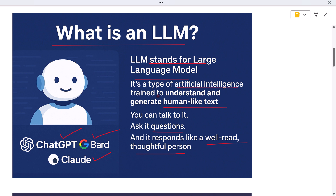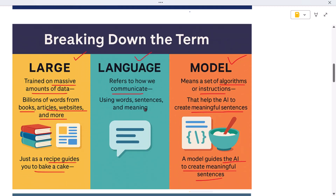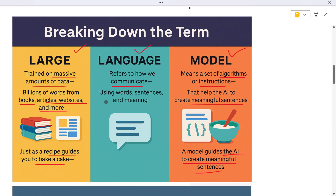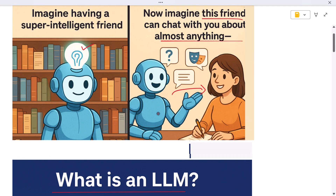To wrap up — LLMs, or large language models, are the brains behind AI tools like ChatGPT. They learn from vast data, recognize patterns, and respond intelligently. Now that you know how they work, the next time you talk to an AI, you'll know exactly what's happening behind the scenes. Thanks for watching, and I'll see you in the next video.